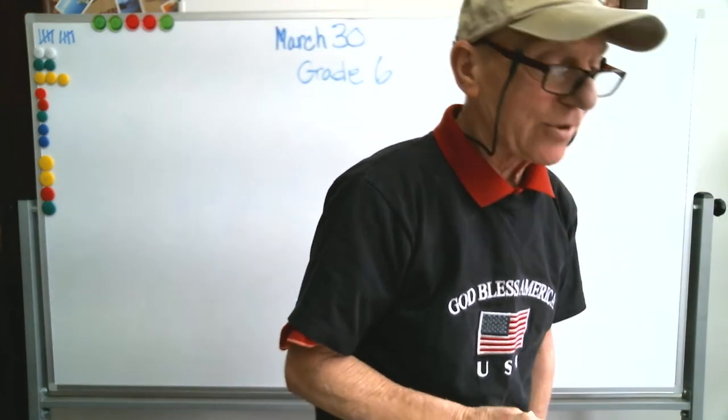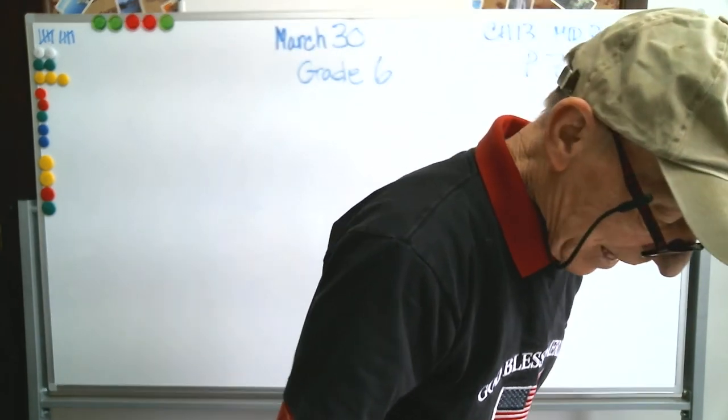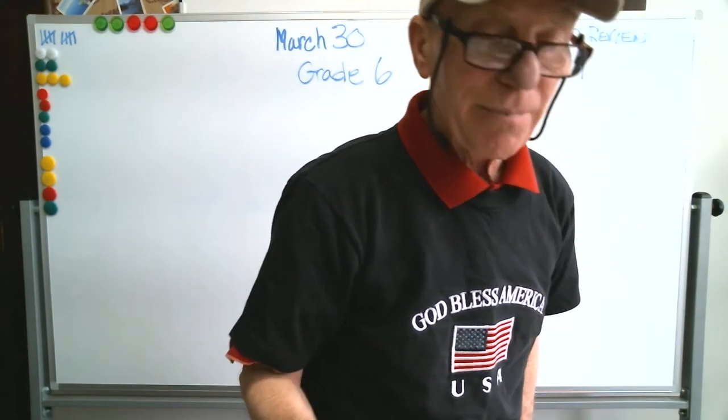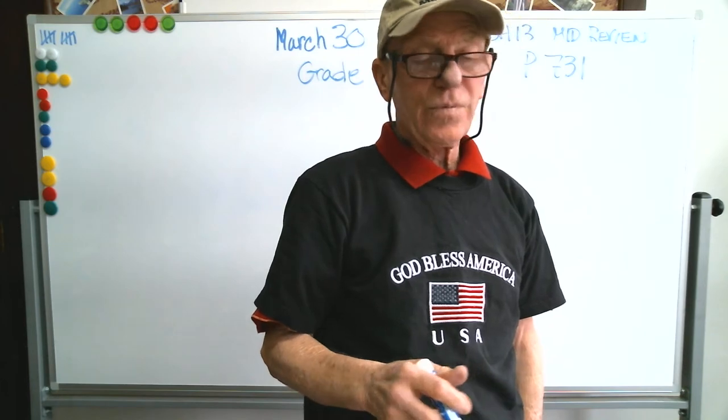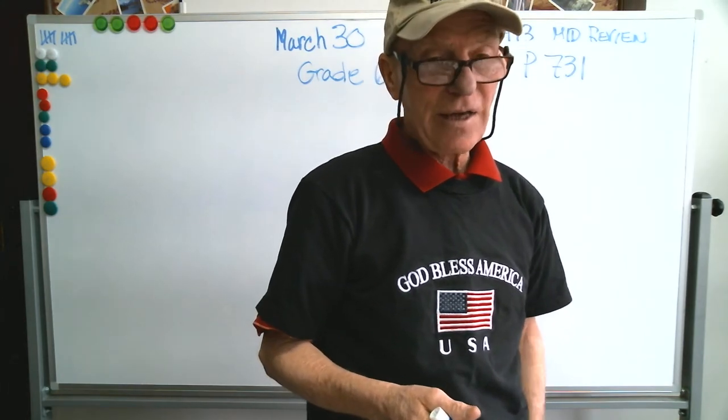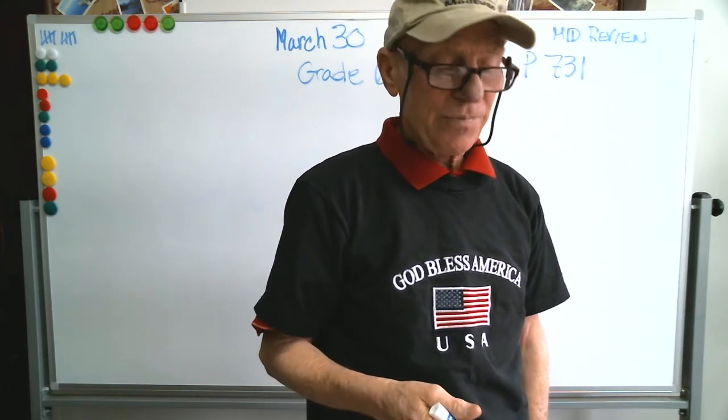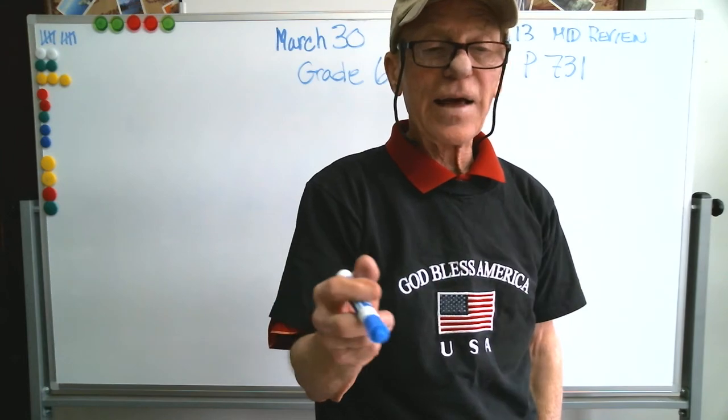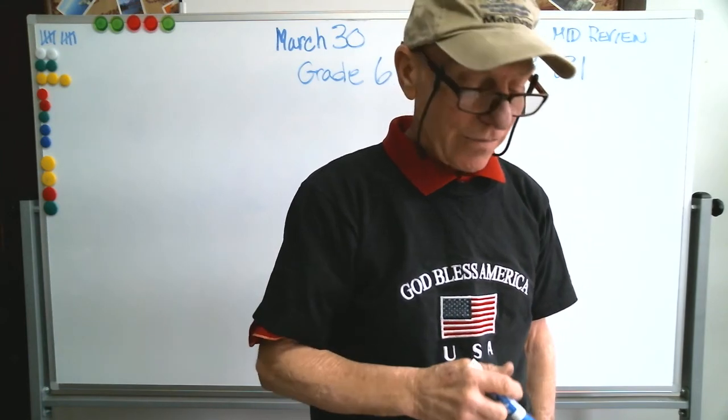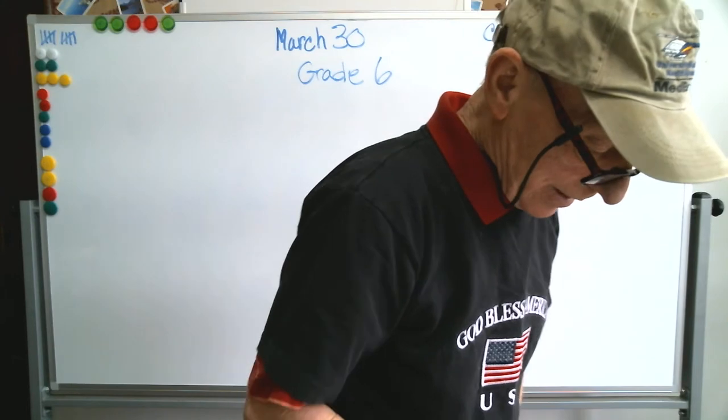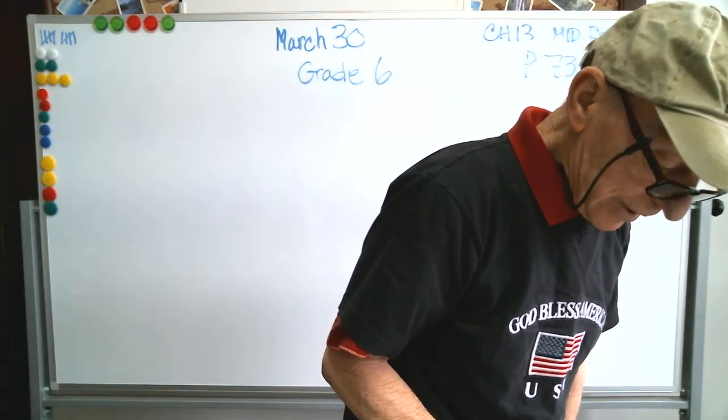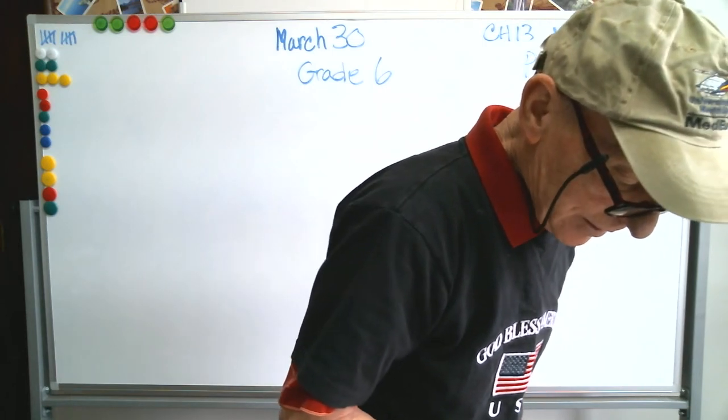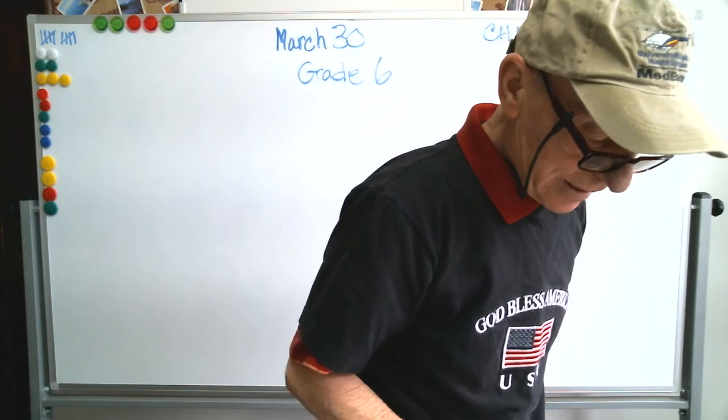The mean absolute deviation is the mean of the distances between the values of a data set and the mean of that data set. So when doing mean absolute deviation, you're working with averages - the mean average of the entire data set and then left and right of that, what the average is of those numbers on either side. Number five: make a box plot for this data set.